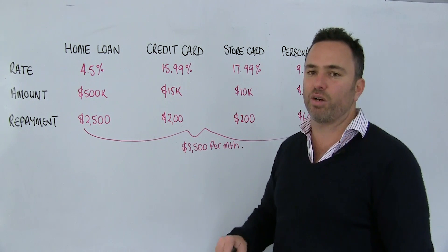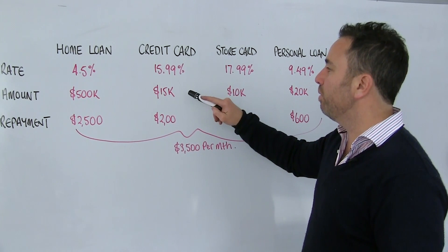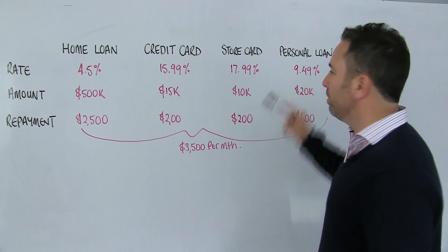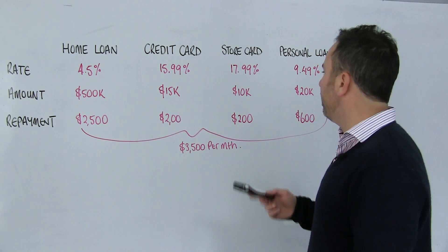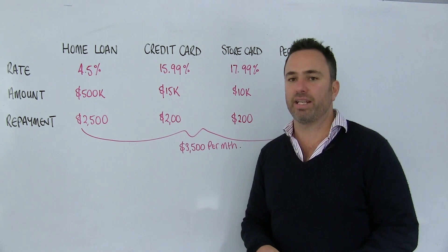That's just the interest component. I've got a credit card at 15.99, fantastic store card at 17.99, and a personal loan at 9.49. 15 grand, 10 grand, and 20 grand. So we've got there our 45 grand's worth of unsecured debt. So 545 grand in total.